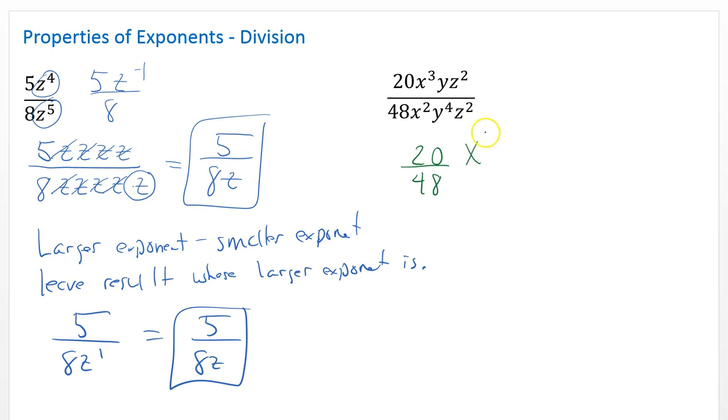And then you have the x to the 3rd over the x squared, and then you have y over y to the 4th, and then z squared over z squared. Now, really, this is still just one fraction, but I just want to separate it so you can clearly see what's going on.